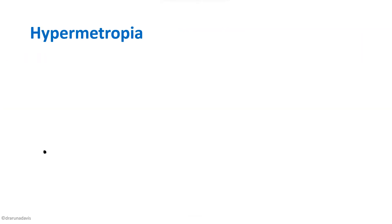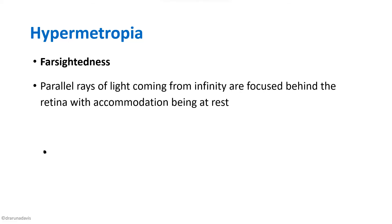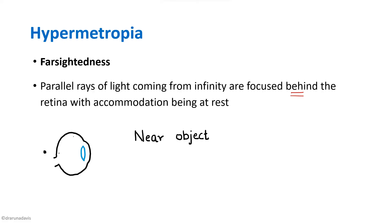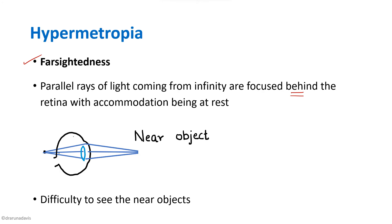The second type of ametropia is hypermetropia, which means farsightedness. For such individuals, parallel rays of light coming from infinity are focused behind the retina — with accommodation at rest. For far objects, they will try to accommodate and can somehow see clearly. But for near objects, the focus will be behind the retina. That is why they can see far objects — it is called farsightedness — and it is difficult for them to see nearer objects.